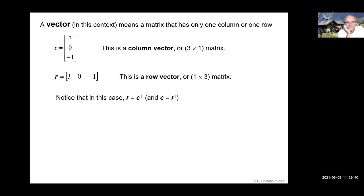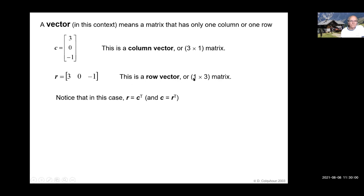The term vector in this particular context means a matrix that has only one column or row. C is a column vector, or a three by one matrix — three rows, one column. R is a row vector, or a one by three matrix — one row and three columns. In this particular case, C is the transpose of R.